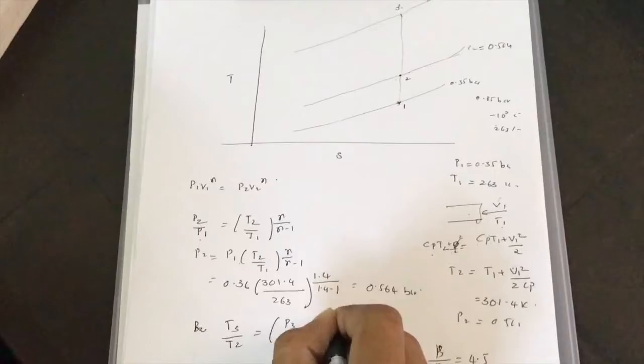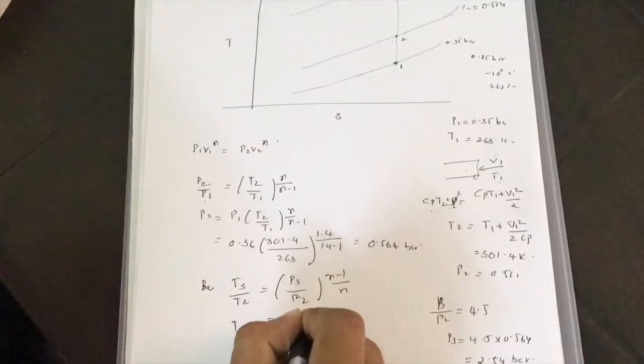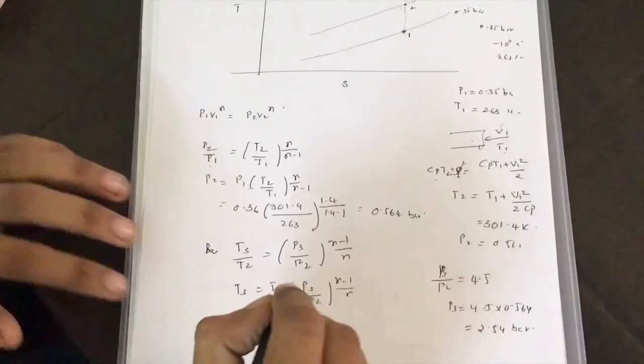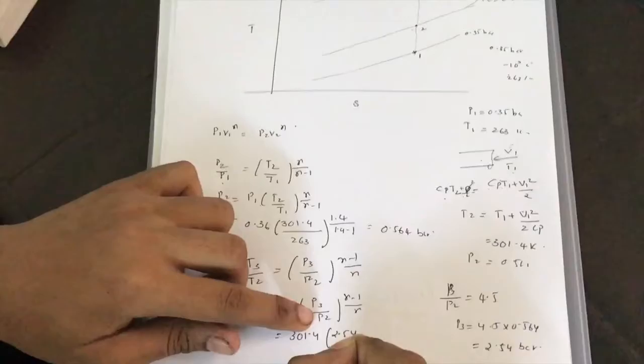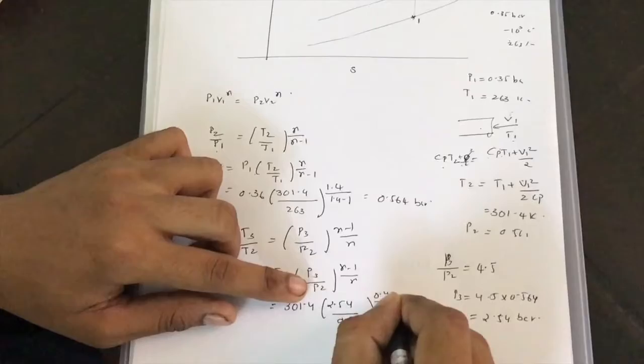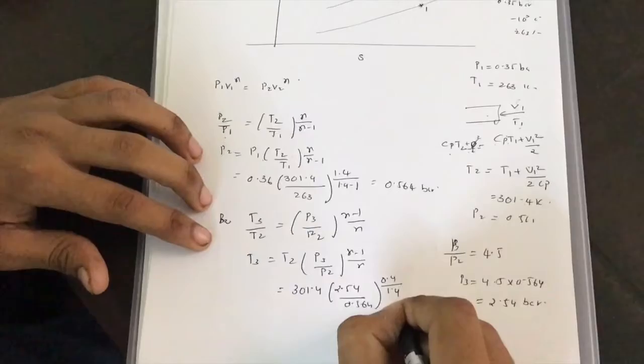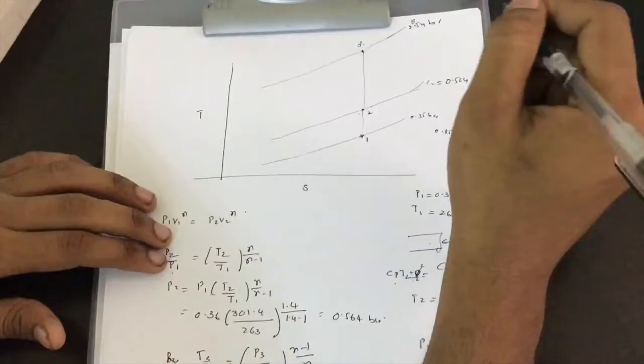For ideal compression: T3/T2 = (P3/P2)^((γ-1)/γ). Substituting T2 = 301.4 K, P3/P2 = 4.5, and γ = 1.4 gives T3 = 463.3 Kelvin.